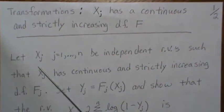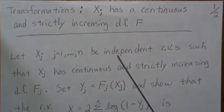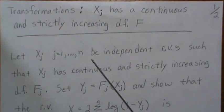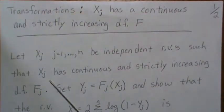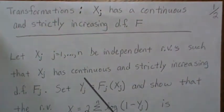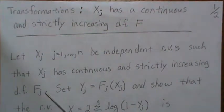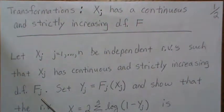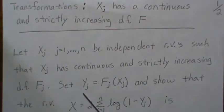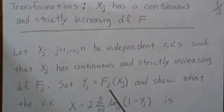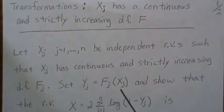Here we're going to let X1 through Xn be independent random variables such that each Xj has a continuous and strictly increasing distribution function Fj. Now we're going to set Yj equal to Fj(Xj).